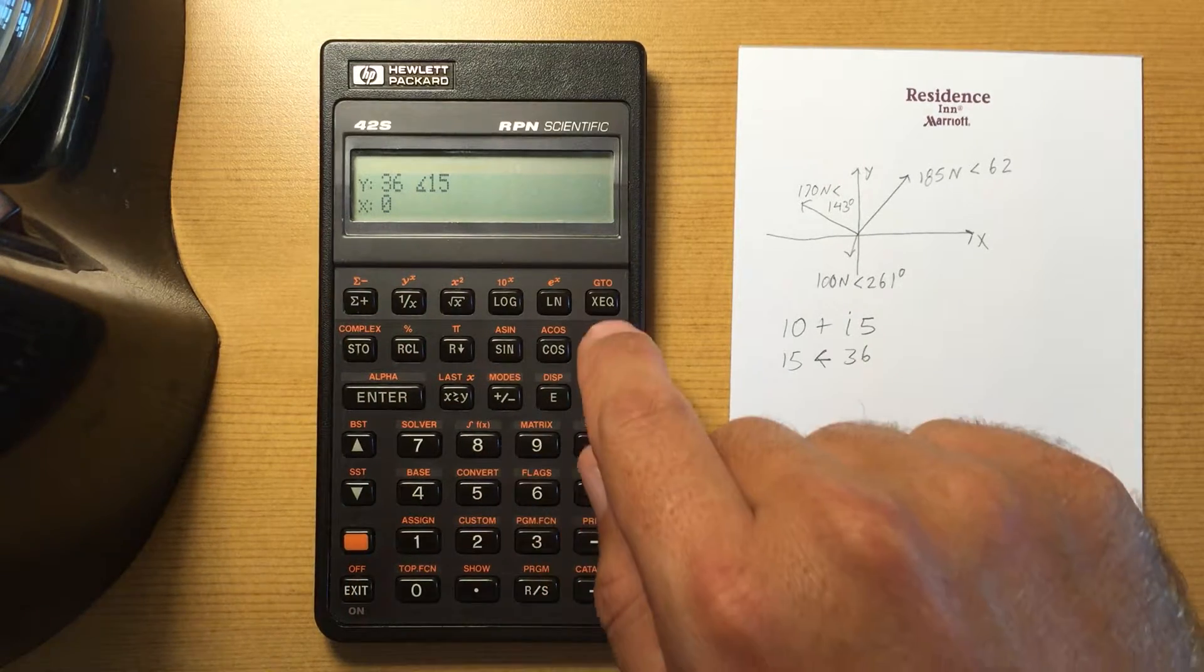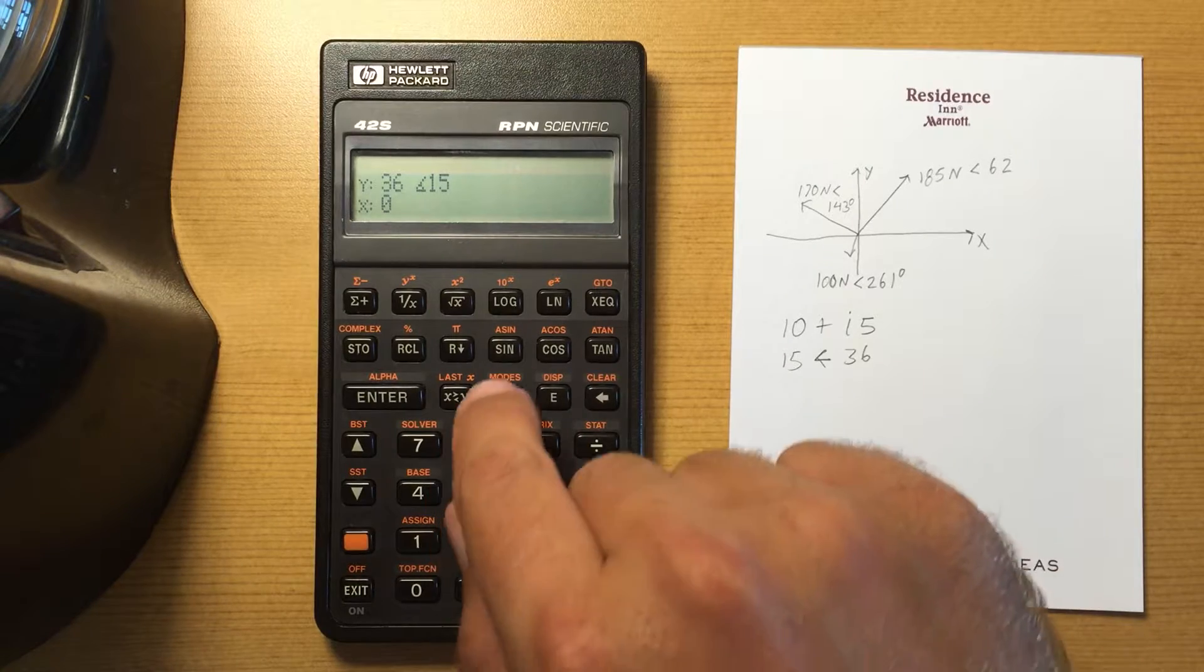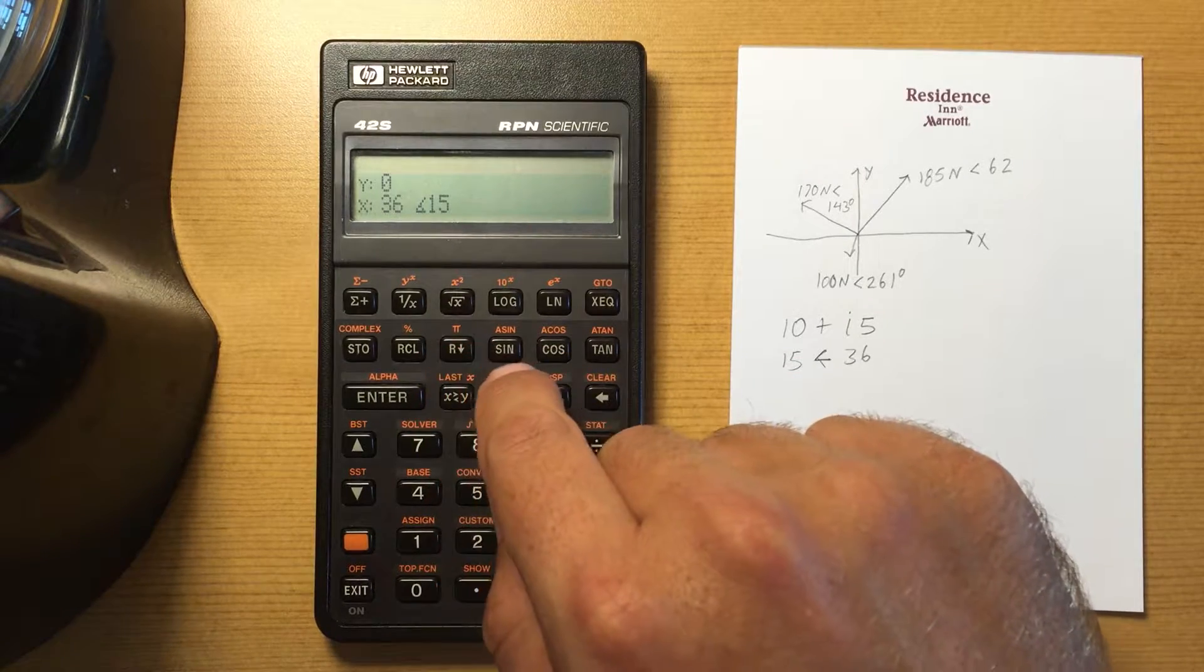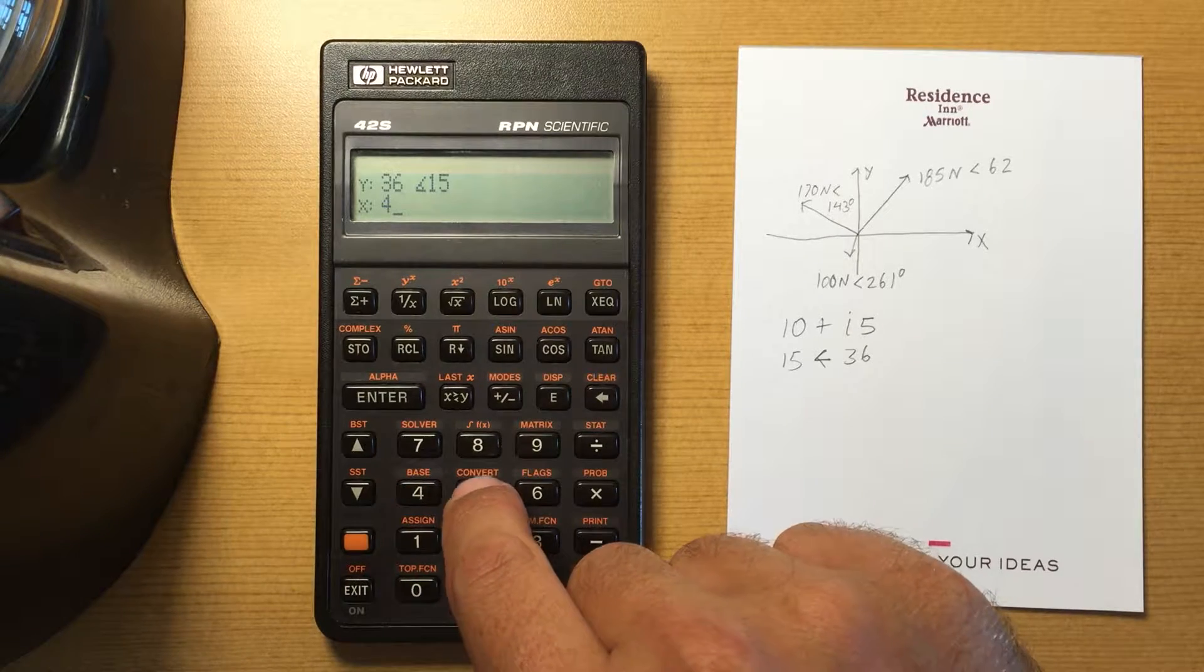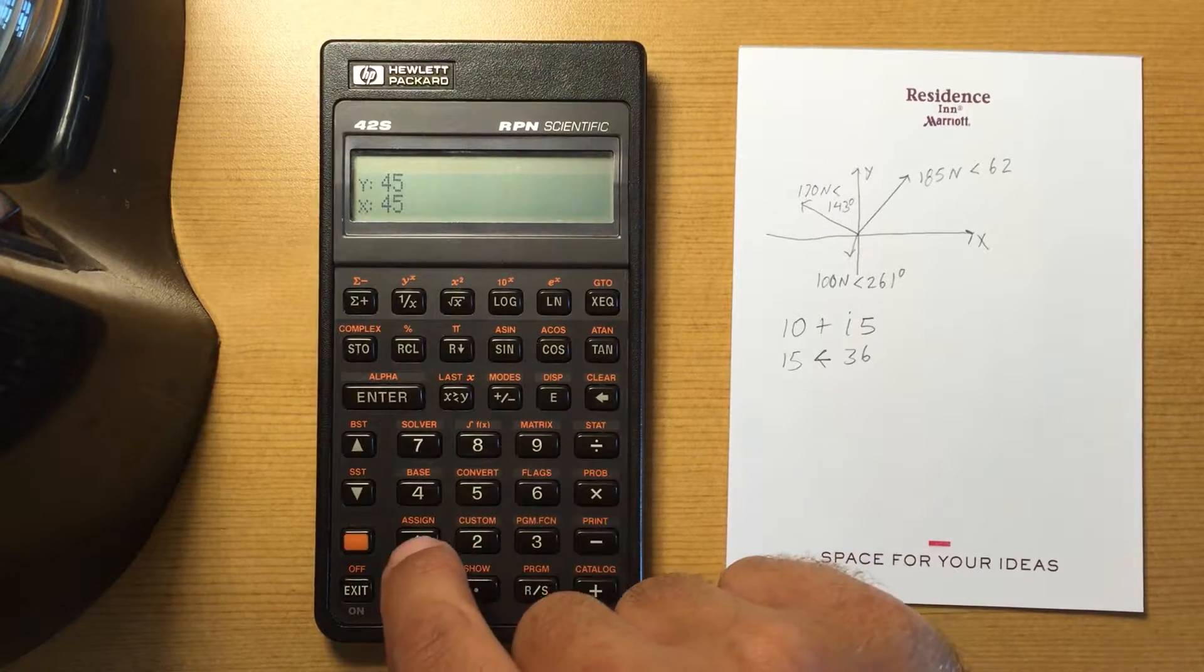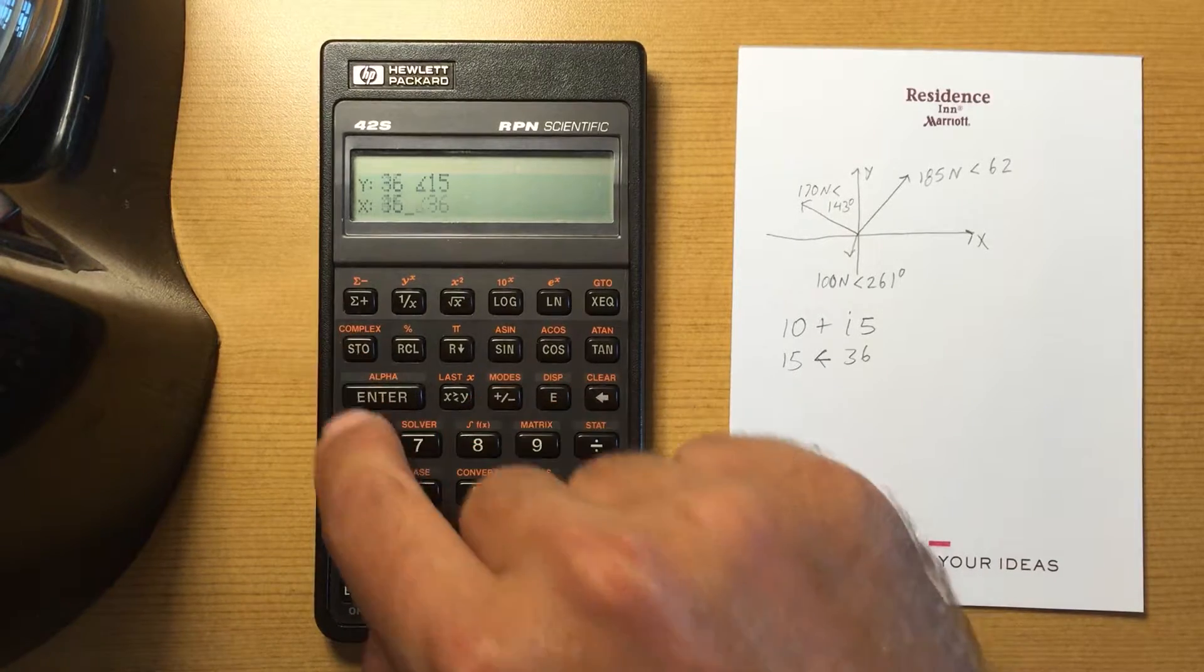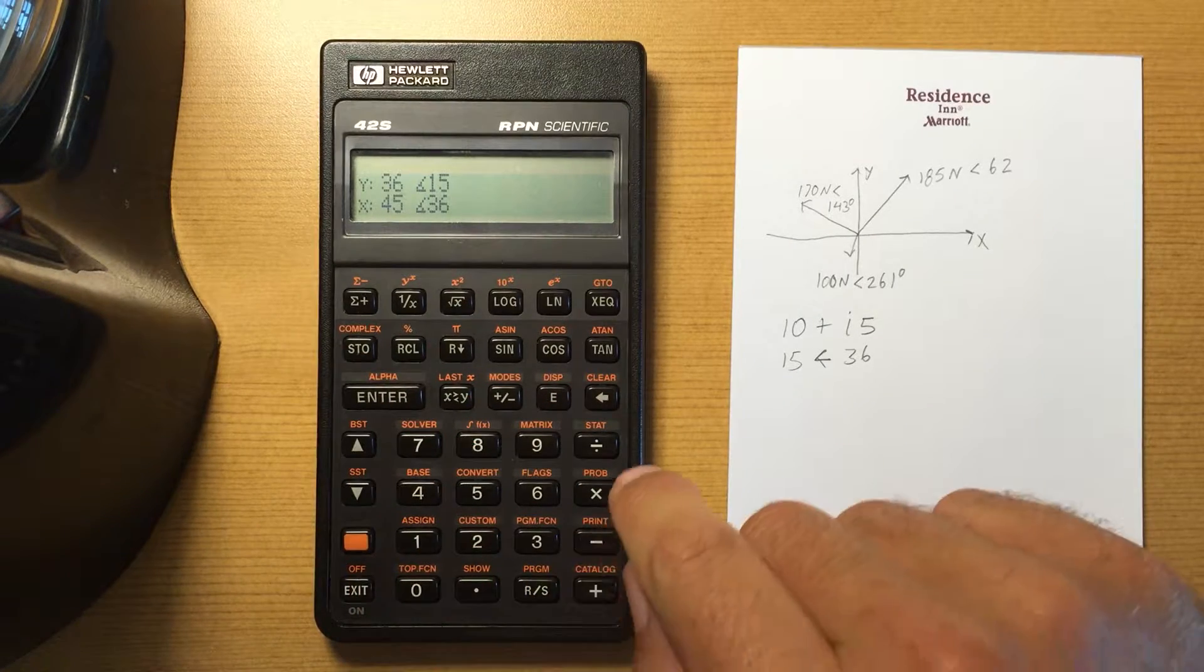And I can do operations with complex numbers. So let's see, 45 angle 36, and then I multiply those together.